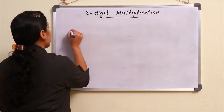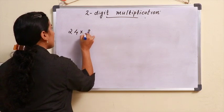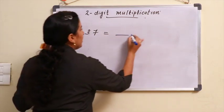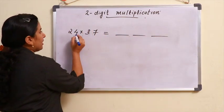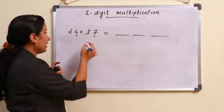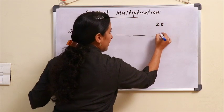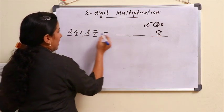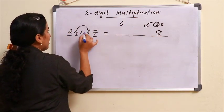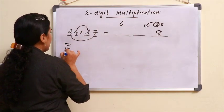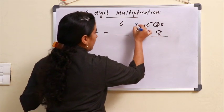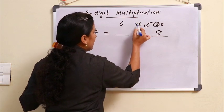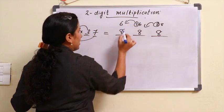Let's take the next question: 24 × 37. Now we have 3 spaces. 4 × 7 is 28 — so 8 and carry 2. Then 2 × 3 is 6, and 4 × 3 is 12. 2 × 7 is 14. 12 plus 14 is 26, plus carry 2 is 28. So 8 in units, 8 in tens, 8 in hundreds — the answer is 888.